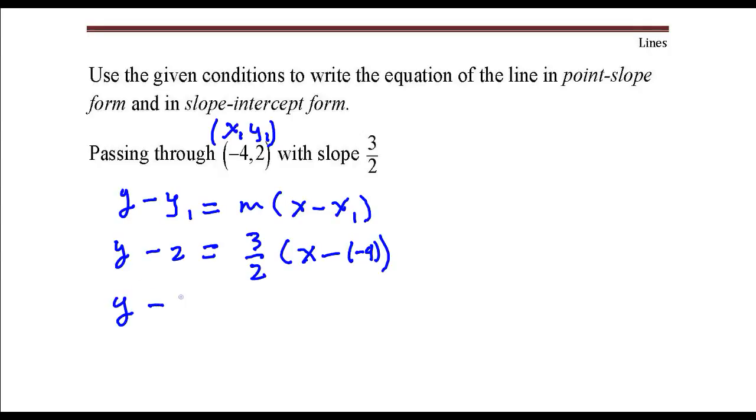I'm just going to clean this up a little bit. y minus 2 equals 3 halves times x plus 4. And that's it. That is point-slope form.